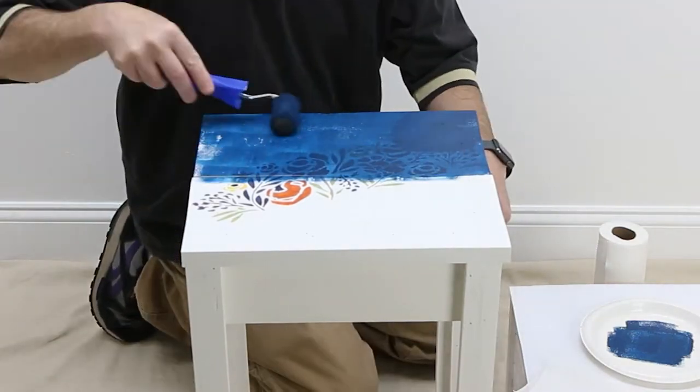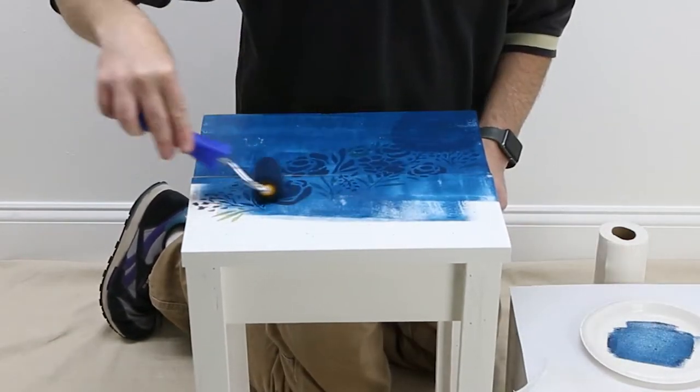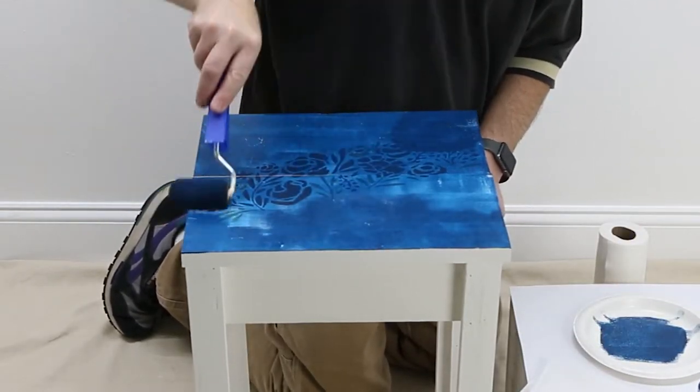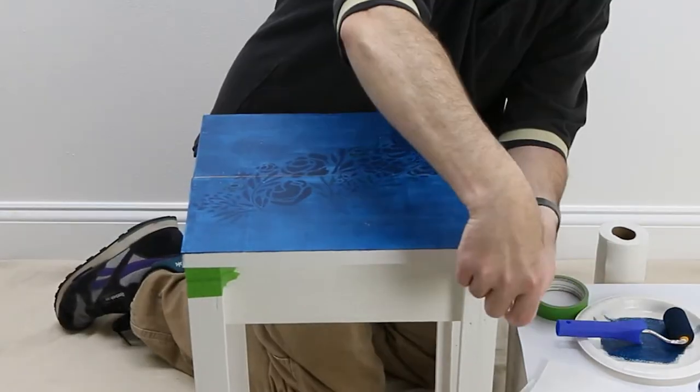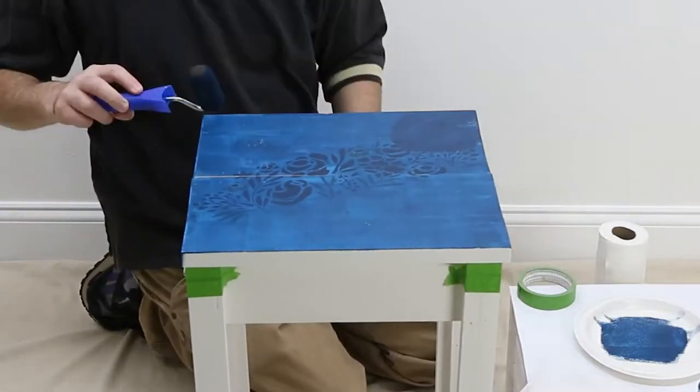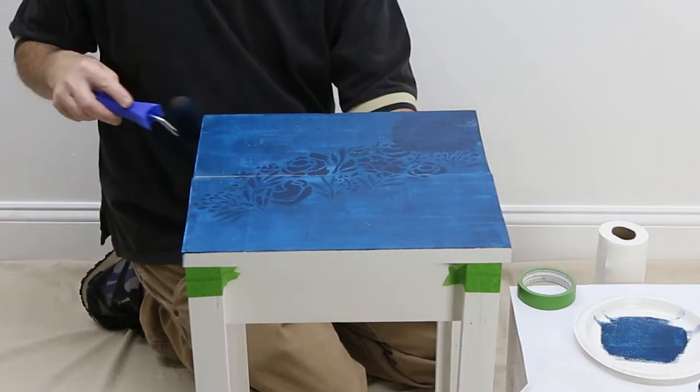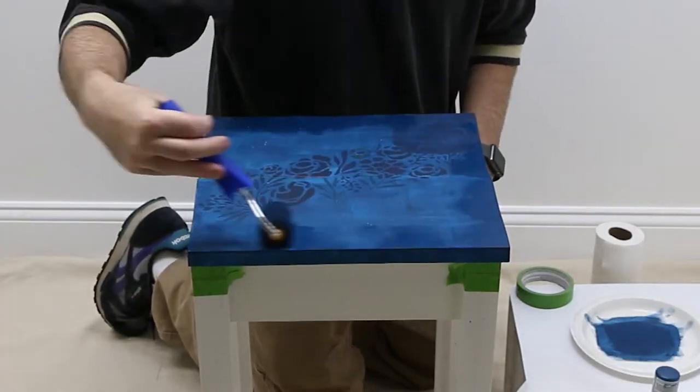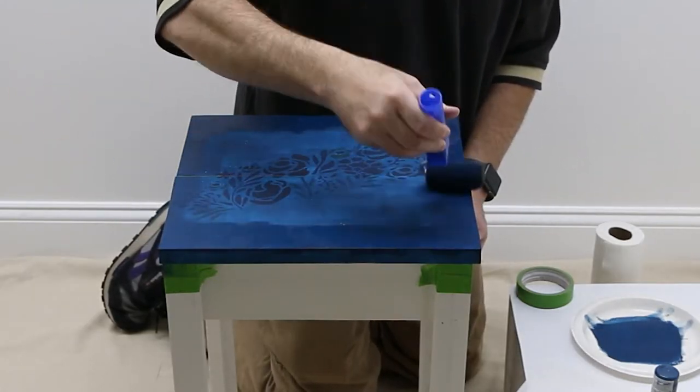First, paint the tabletop navy blue with Americana acrylic paint. Only the edge of the table will be visible around the tiles, so focus there when applying the paint.